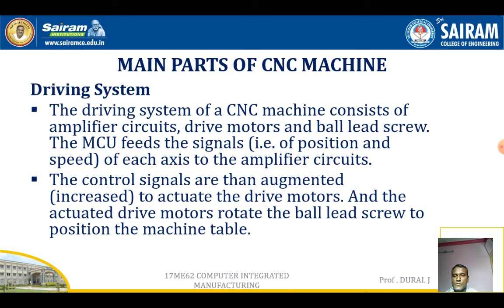The driving system of a CNC machine consists of amplifier circuits, drive motors, and ball lead screws. The MCU feeds a signal for each axis to the amplifier circuit. The control signals are then amplified to actuate the drive motors, and the actuated drive motors rotate the ball lead screw to position the machine table. With the help of the lead screw, the tool post moves nearer to the workpiece and the operation is performed.